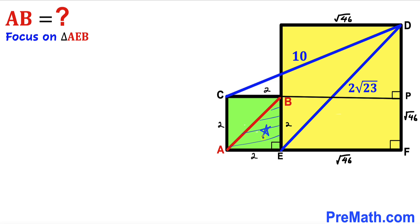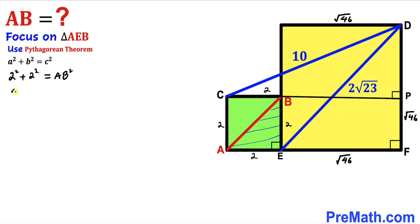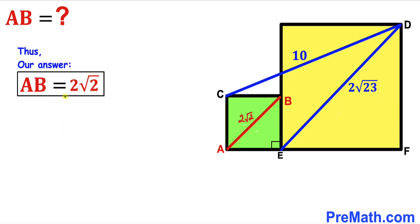Now let's focus on right triangle AEB and apply the Pythagorean theorem. The two legs are both 2, and AB is the hypotenuse. So: 2² + 2² = AB². Simplifying: 4 + 4 = AB², so AB² = 8. Taking the square root of both sides, AB = 2√2 units. That is our final answer.